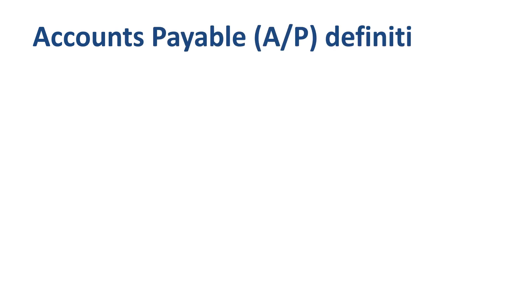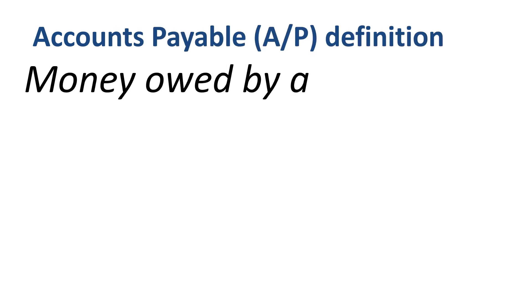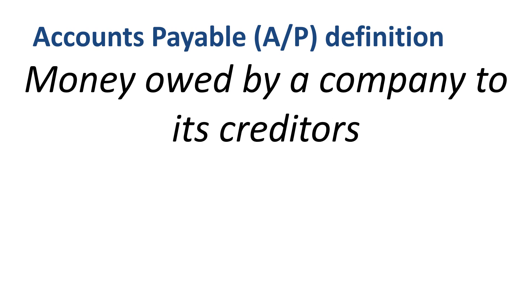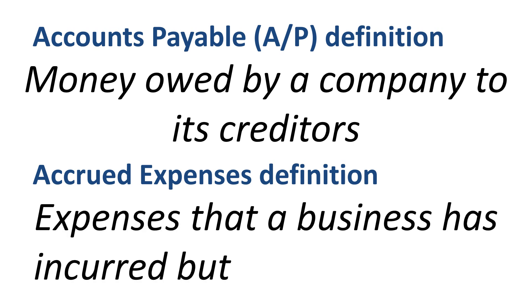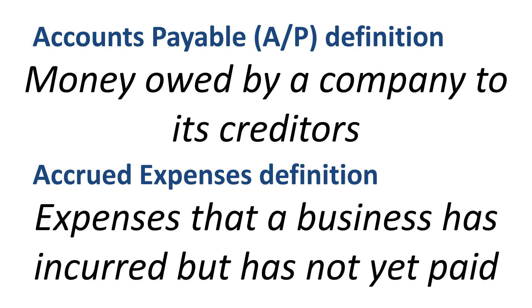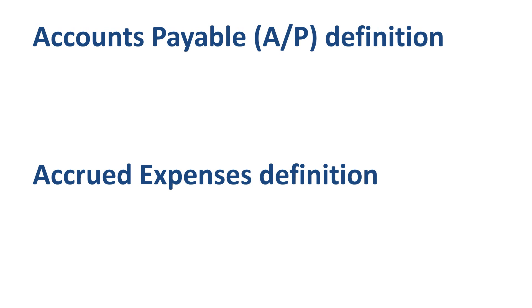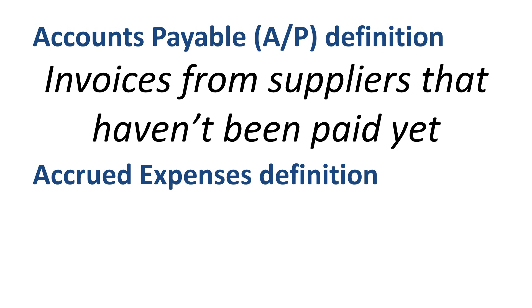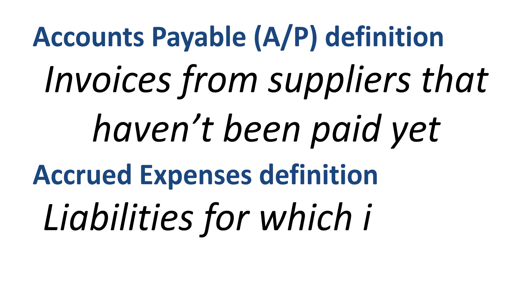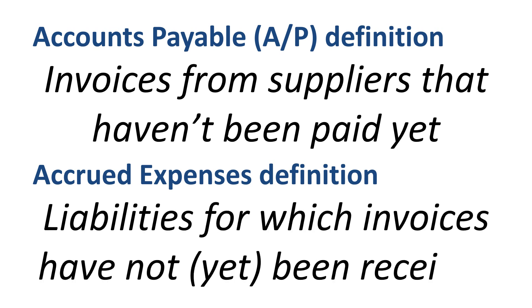If you search the internet for a definition of accounts payable, you will probably find something like 'money owed by a company to its creditors.' If you search for a definition of accrued expenses, you will probably find something like 'expenses that a business has incurred but has not yet paid.' That's somewhat helpful, but does not set them apart too much. A more useful definition of accounts payable is invoices from suppliers that haven't been paid yet, and for accrued expenses, liabilities for which invoices have not, or not yet, been received.